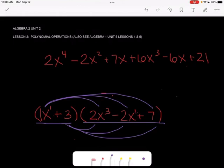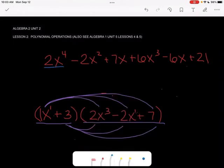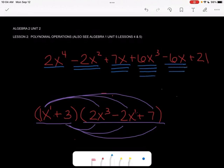And now I need to go through and combine like terms. I can't combine anything with the x to the 4th, because there are no other x to the 4th. I can combine this negative 2x squared with nothing, because there's no x squareds. I can combine this 7x with this negative 6x. There's nothing I can combine this x to the 3rd with or this 21. So the only thing that can combine here is this 7x and this negative 6x.